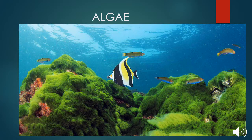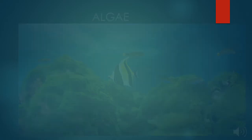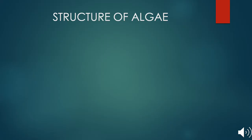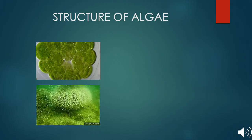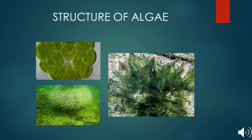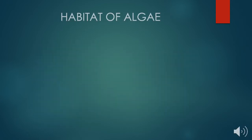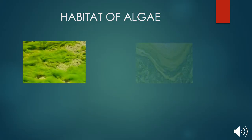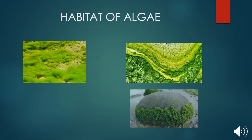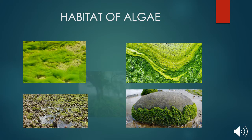Algae can be unicellular or multicellular, and are also found in clumps known as colonies. Algae can be found in a number of places, such as moist soil, all kinds of water bodies, moist rocks, stagnant water, and tree barks.